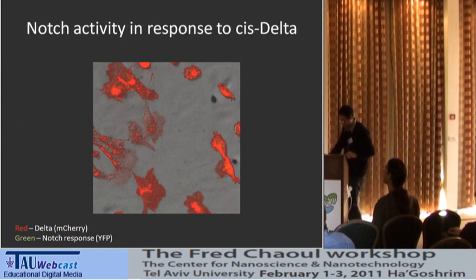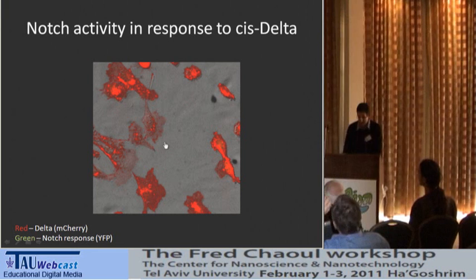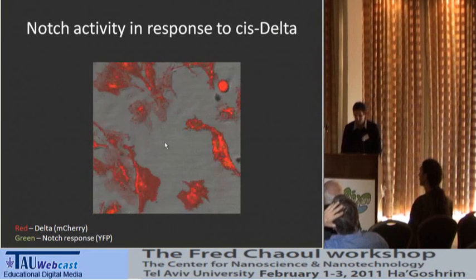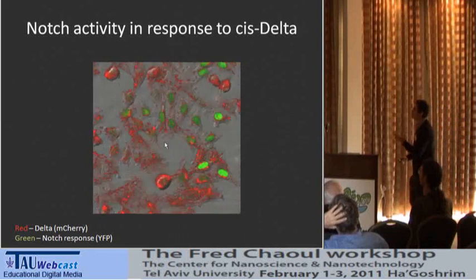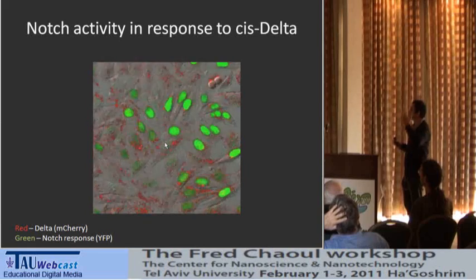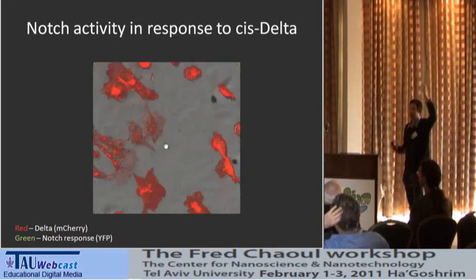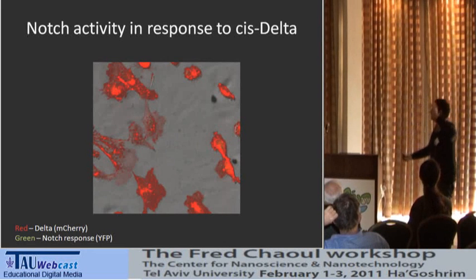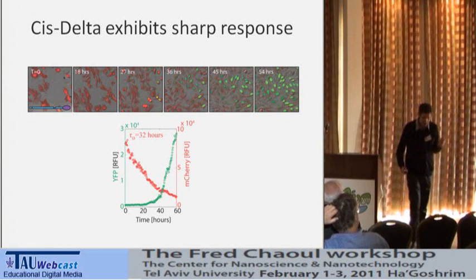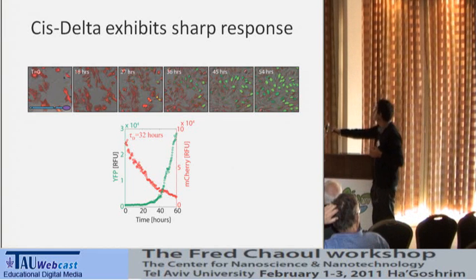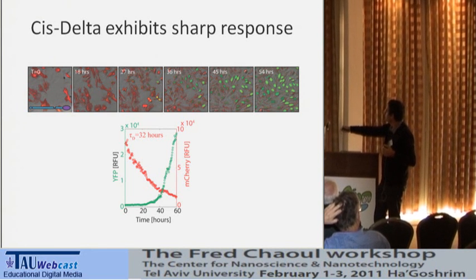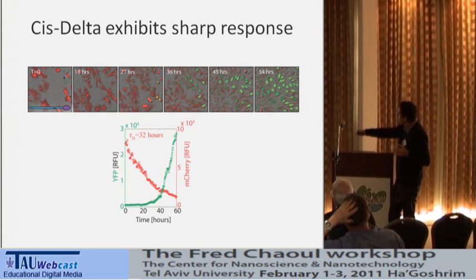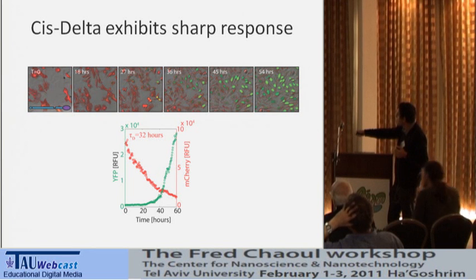In this movie, you see cells expressing high levels of cis-Delta — the red fluorescent protein. As the movie progresses, the level of cis-Delta slowly goes down. After a while, you start seeing the Notch signaling response turn on. At the beginning, at high levels of cis-Delta, there is inhibition of Notch signaling. Later, this inhibition is removed as the level of cis-Delta goes down. The turn-on seems to be rather fast — it takes much shorter time to go from almost no response to maximal response, compared to the decay time of Delta.